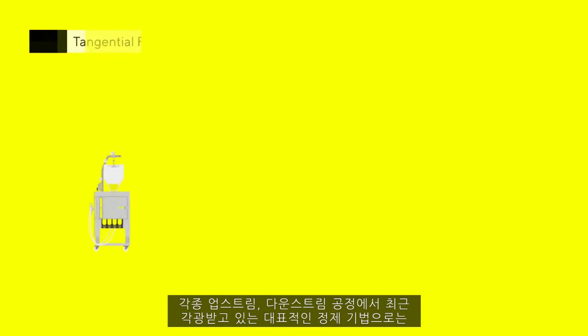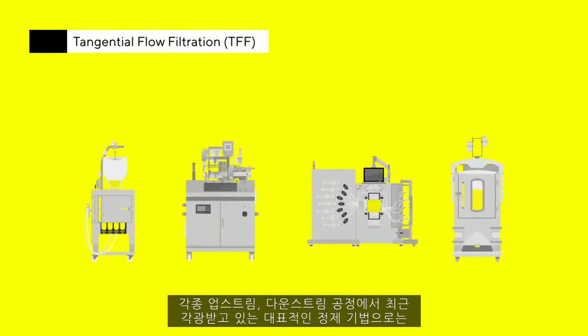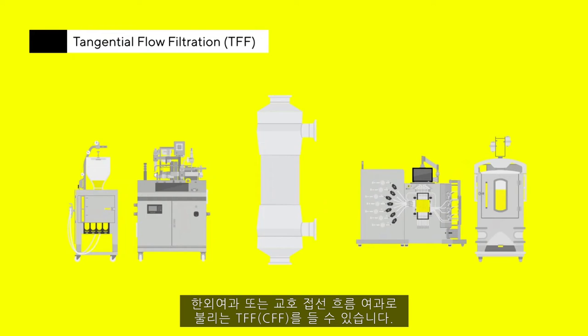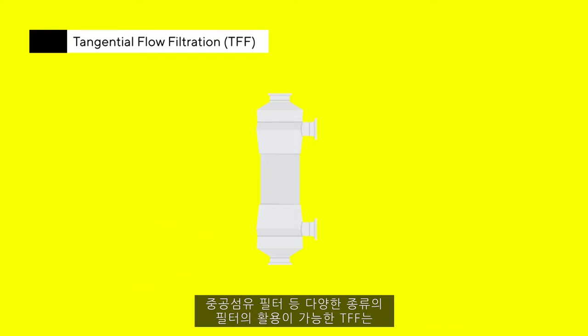Filtration plays a vital role in biomanufacturing to separate molecules and particles of interest from other material. Tangential flow filtration, TFF for short, is fast-emerging as a go-to purification technology in a variety of upstream and downstream processes. It's a versatile solution that can feature different types of filters, including hollow fiber filters.